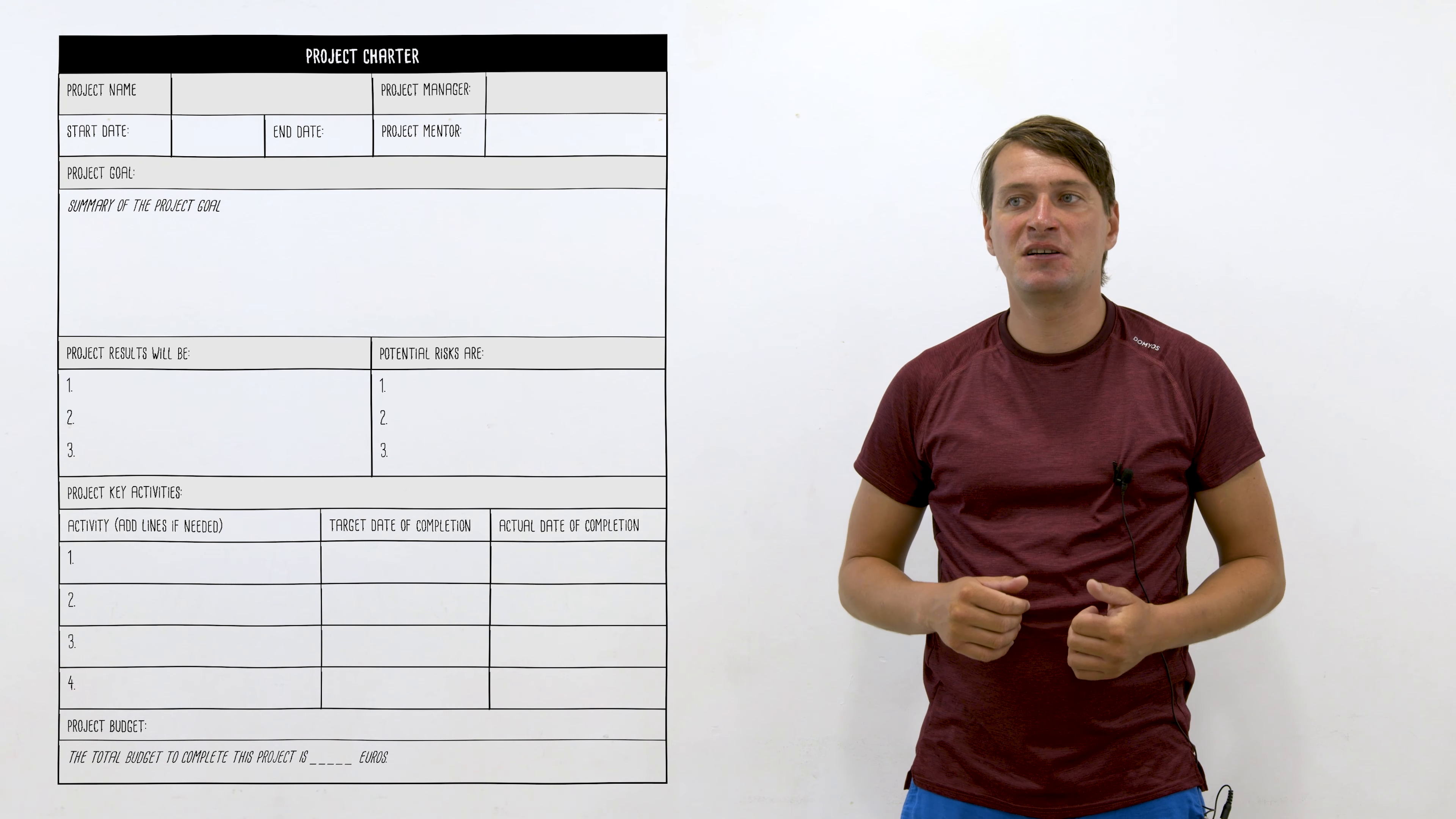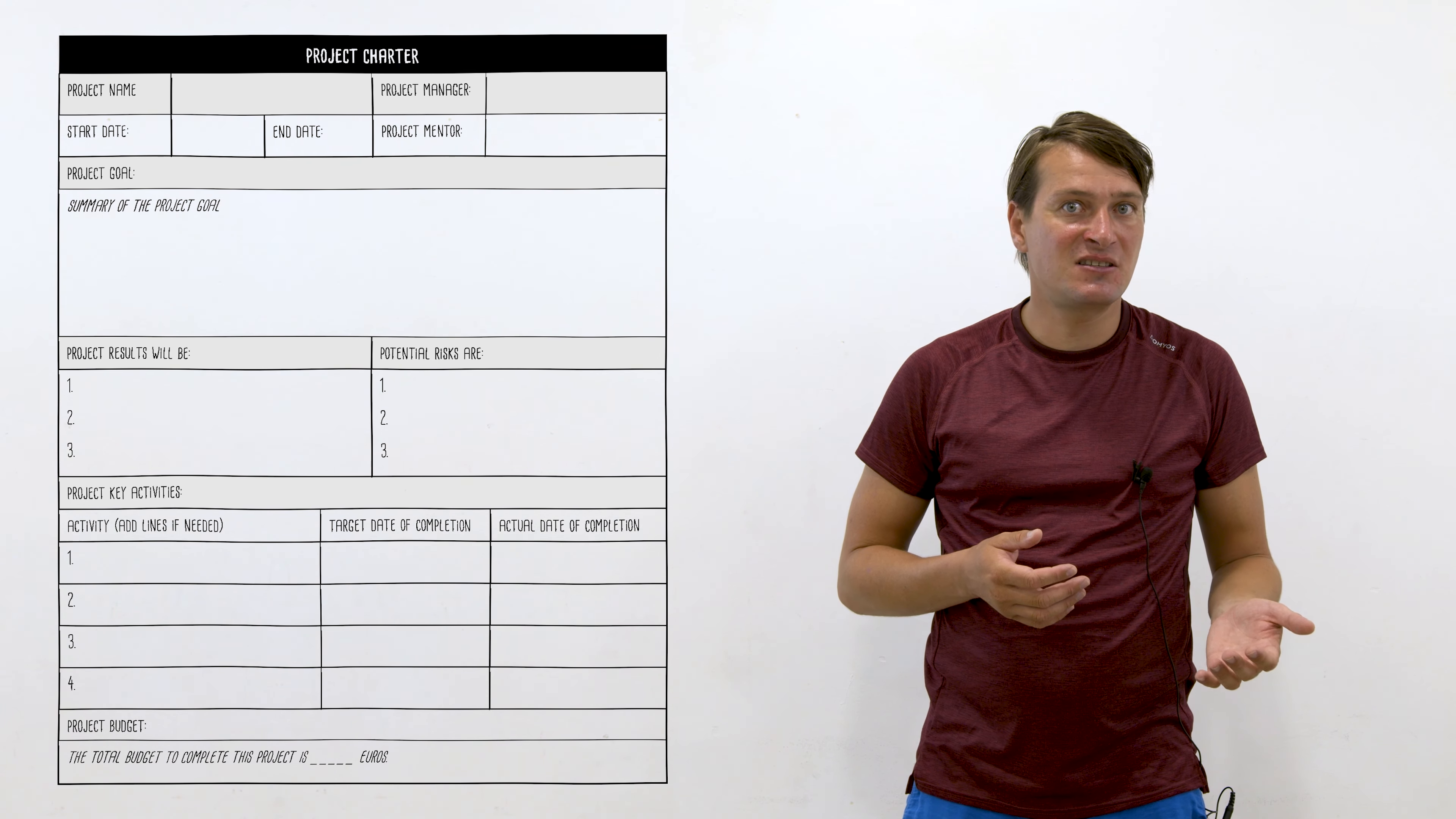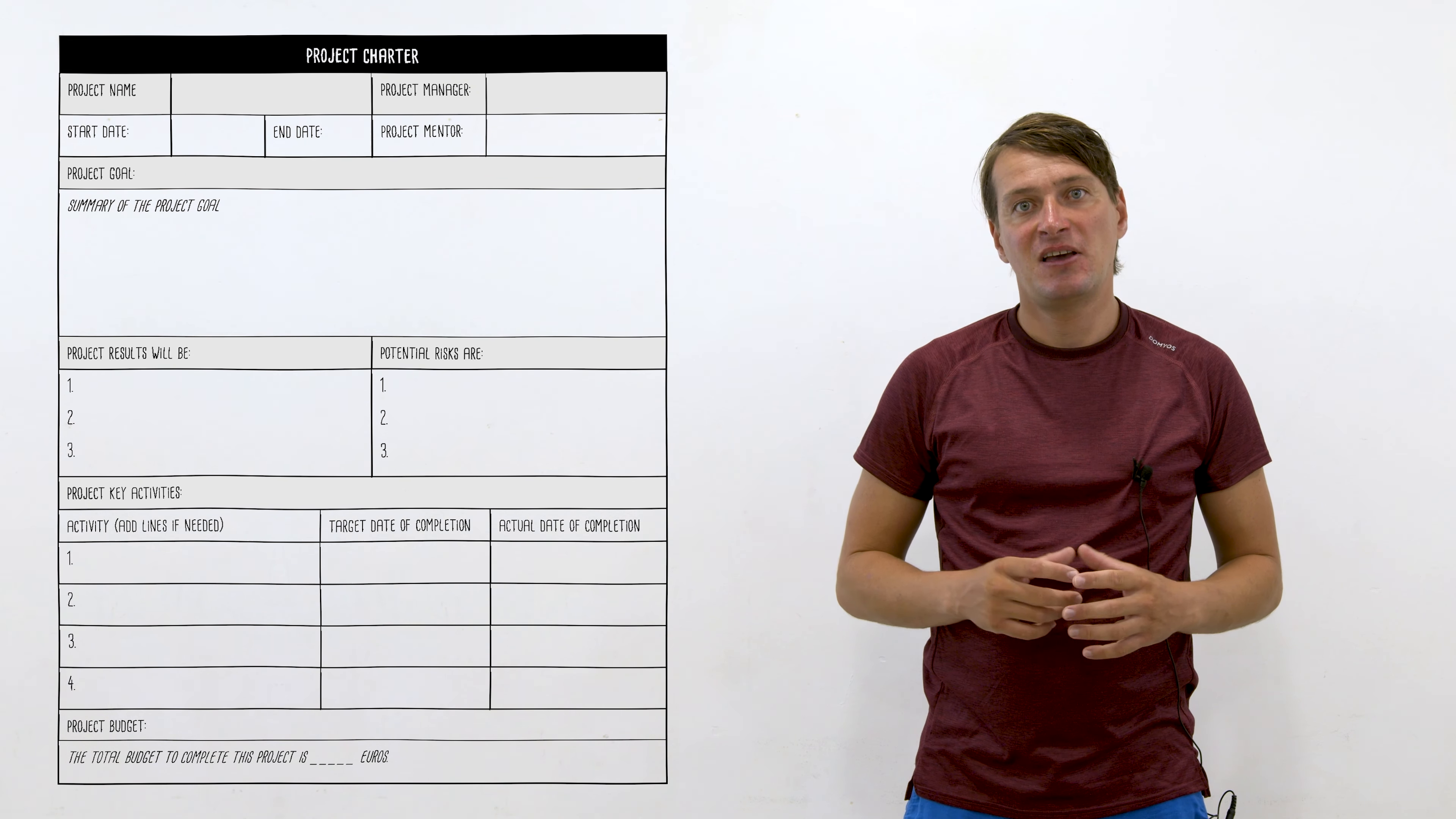So info such as the project name, the project manager, the project mentor, the start date, the end date, a summary of the goal of the project, the project results, the project objectives, activities, and of course a budget and potentially the way that budget is going to be spent.